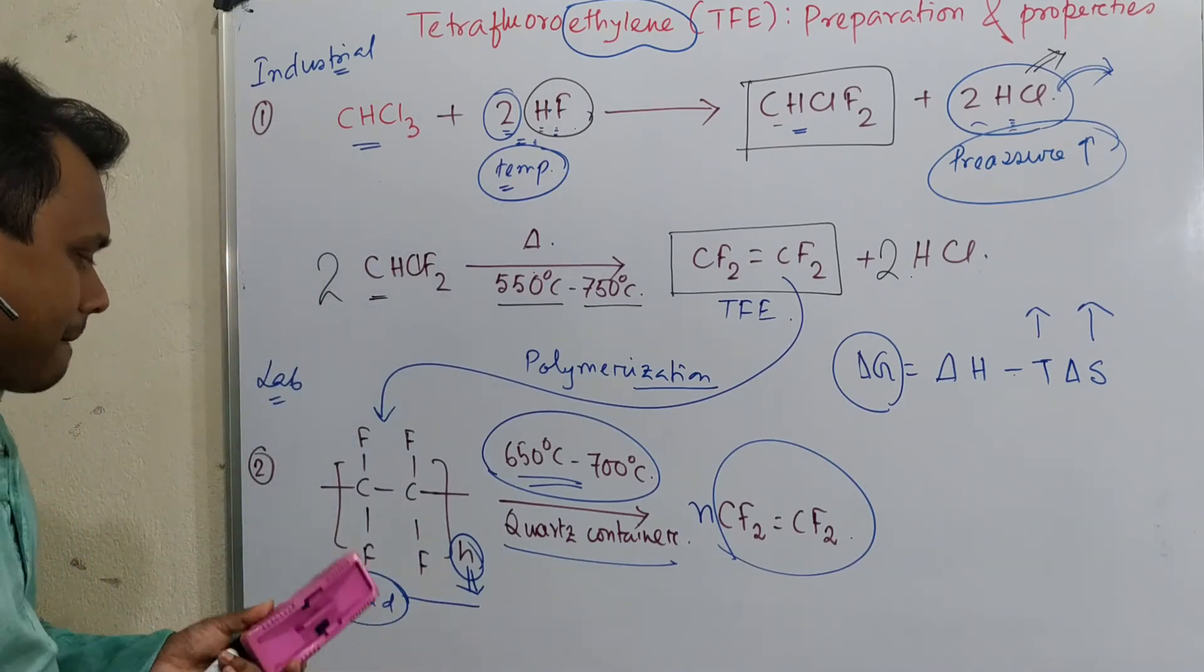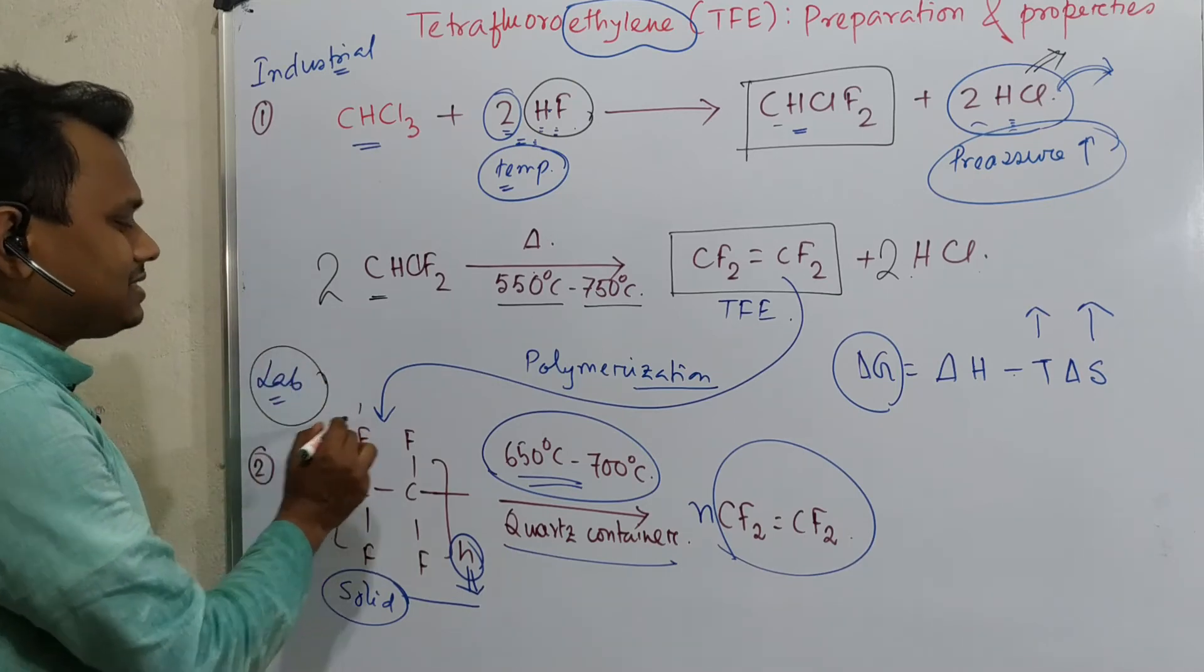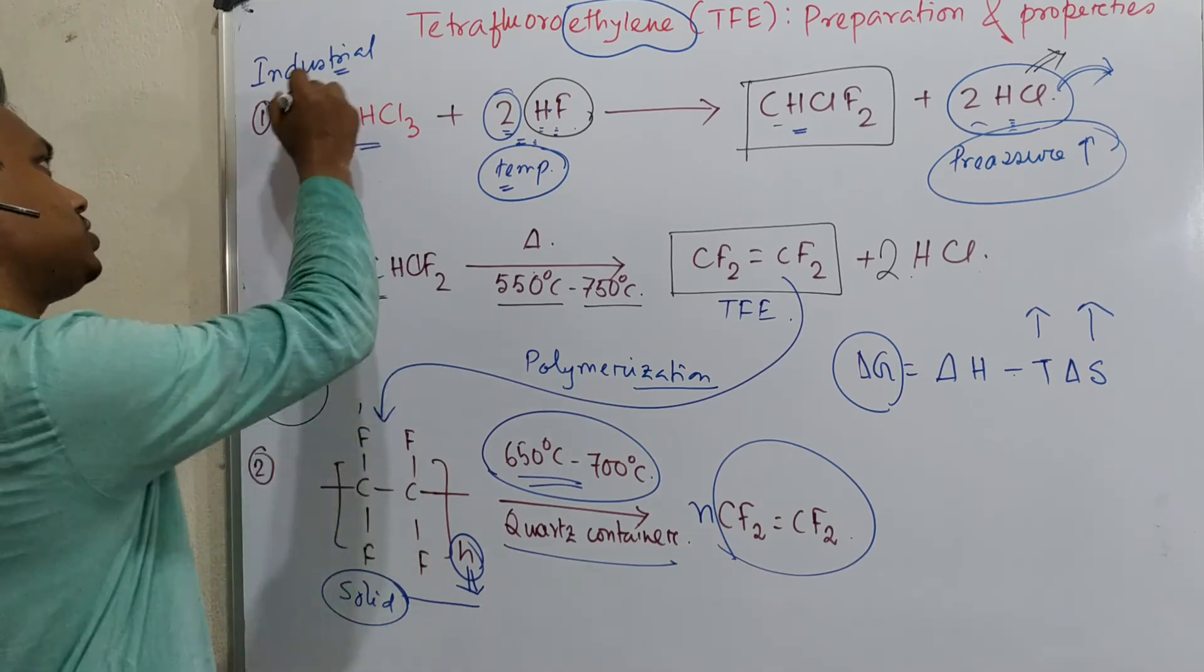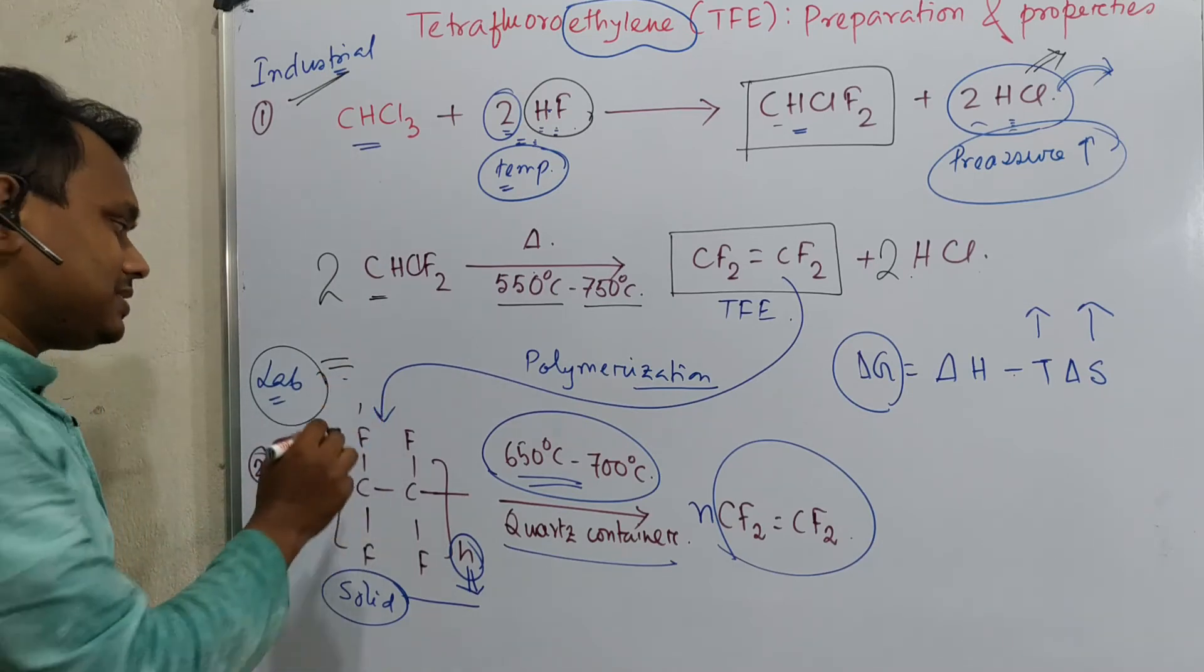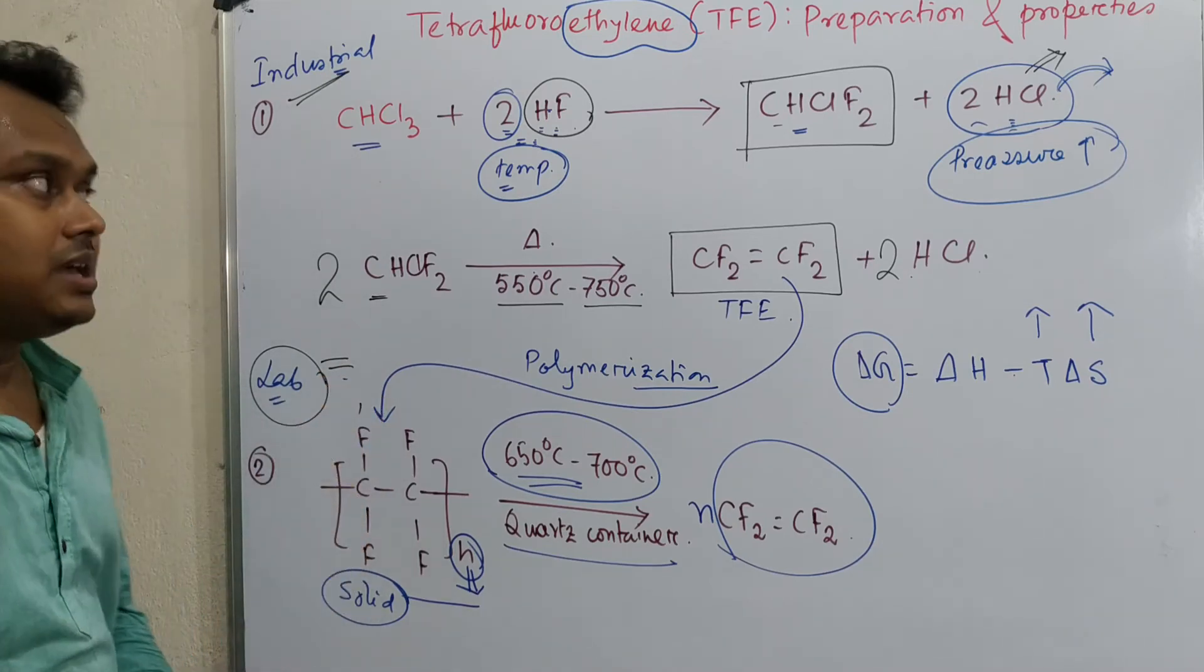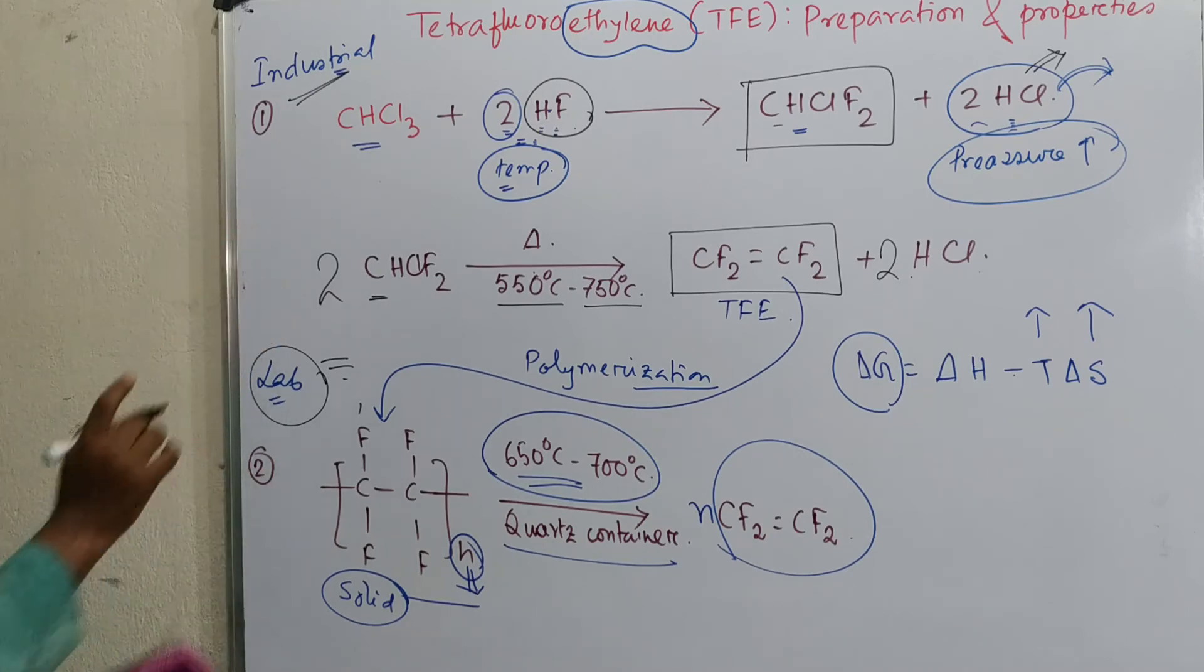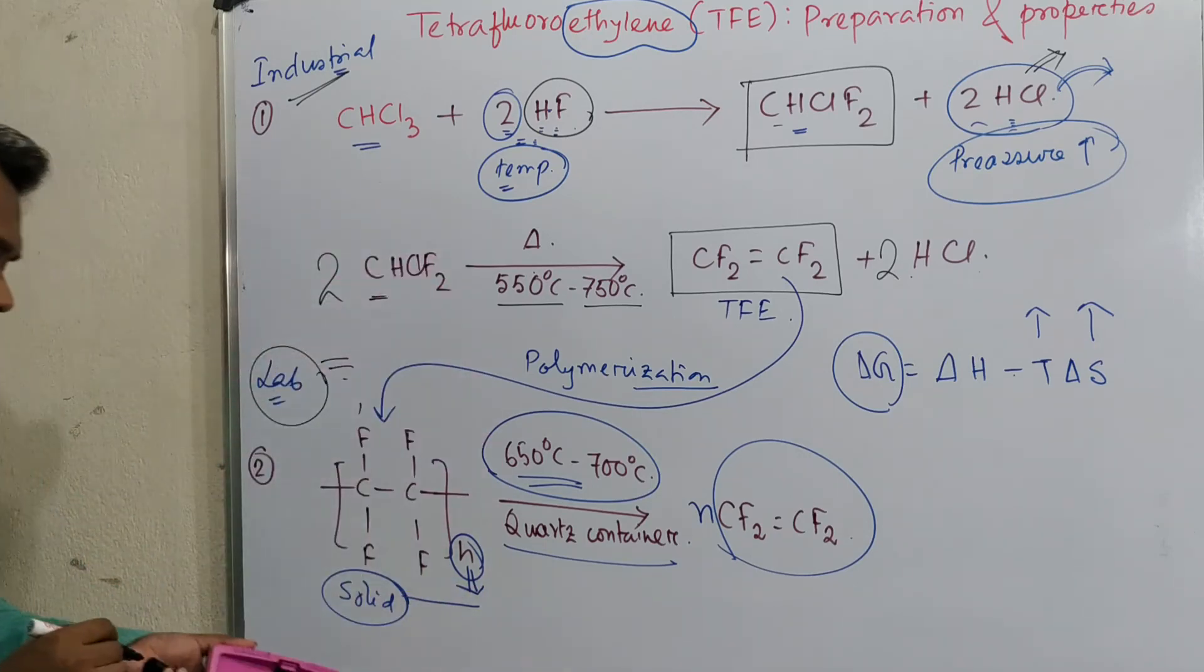Now question, why do we give this laboratory-based method in second scene? What is the actual source? Actual source is industry, and right now we are getting laboratory. So that's why this is a second choice. So in this way, both, this tetrafluoroethylene is prepared.